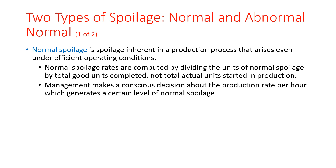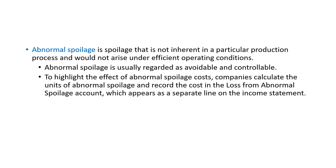There are two types of spoilage: normal and abnormal spoilage. Normal spoilage is spoilage inherent in a production process that arises even under efficient operating conditions. Normal spoilage rates are computed by dividing the units of normal spoilage by the total good units completed. Management makes a conscious decision about the production rate per hour, which generates a certain level of normal spoilage.